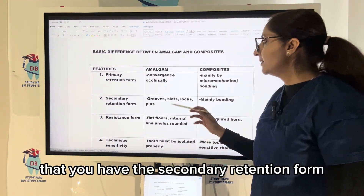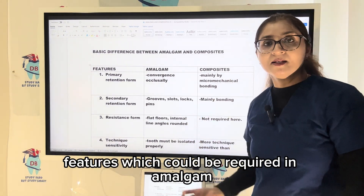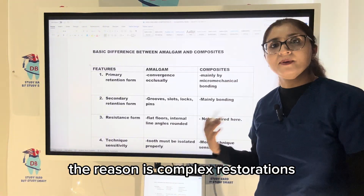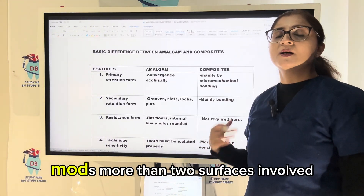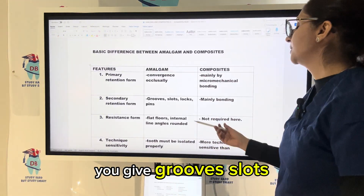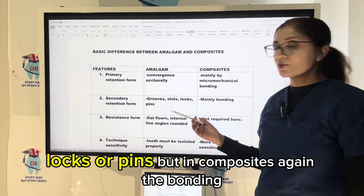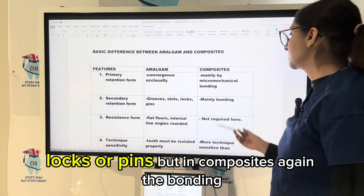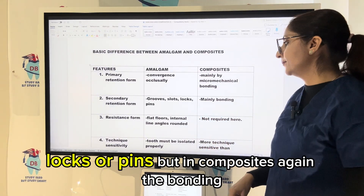Secondary retention form features may be required in amalgam, especially for complex restorations and MODs where more than two surfaces are involved. You give grooves, slots, locks, or pins. But in composites, again it is the bonding that provides retention.